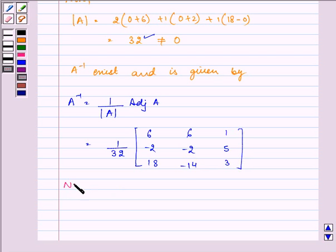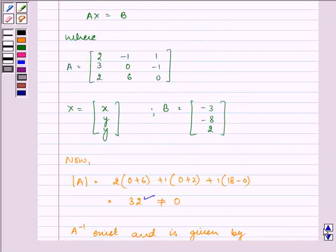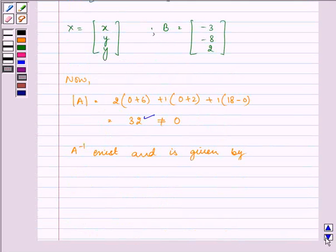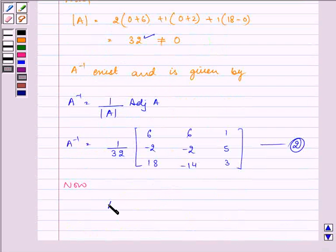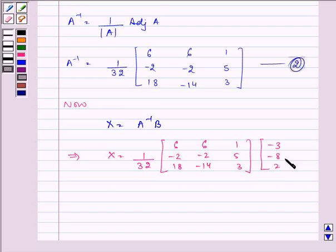Now, let us substitute the value of A inverse. We have X equals A inverse B. So we have X equal to A inverse, let me write it down again, into B, that is minus 3, minus 8, and 2.